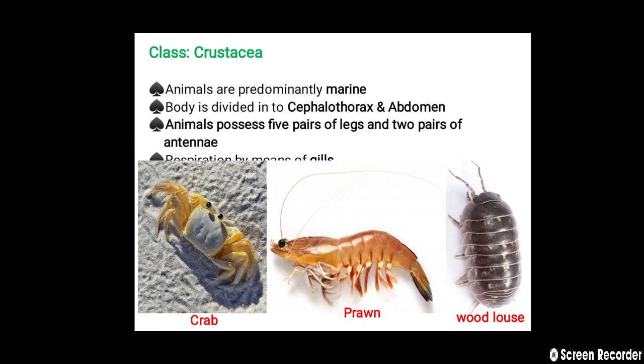The third class, Crustacea: animals are predominantly marine. The body is divided into cephalothorax and abdomen. Animals possess five pairs of legs and two pairs of antennae. Respiration takes place by means of gills. Examples are crab, prawn, and others.